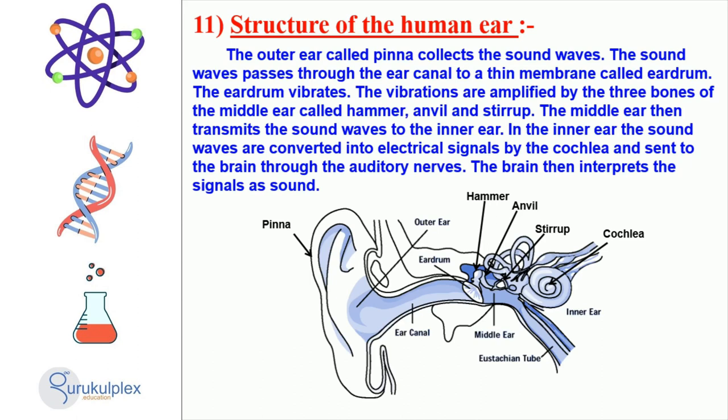The middle ear then sends the sound waves to the inner ear. Inside the inner ear, the cochlea converts the sound waves into electrical signals and sends them to the brain via the auditory nerves. The brain interprets the signals and allows us to hear. Thanks for listening.